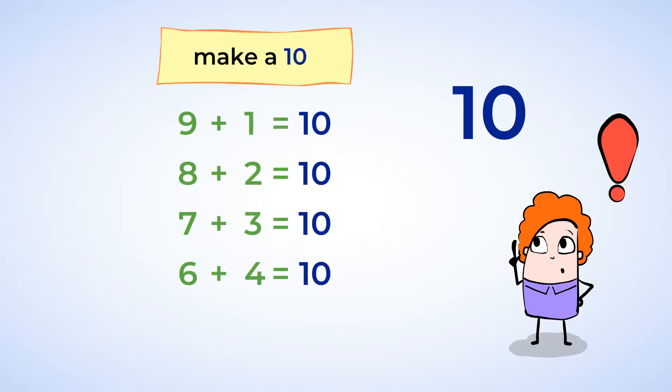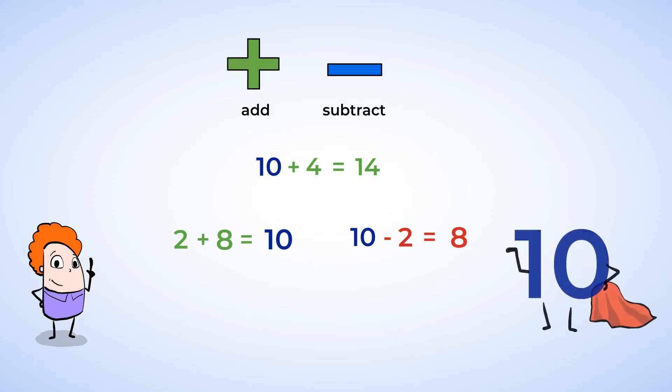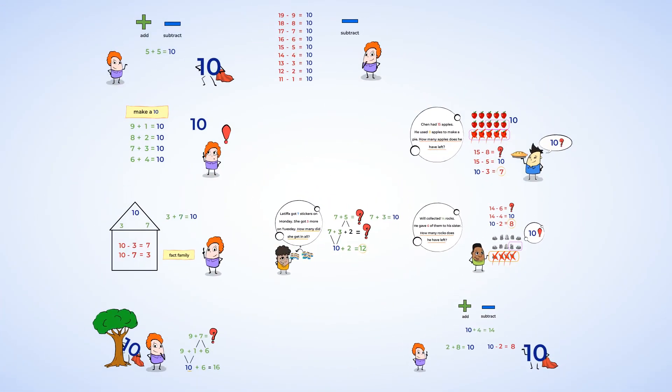Once you find a 10, you can quickly add a number that is smaller than 10 by changing the 0 to that number. For example, 10 plus 4 equals 14. You can also quickly subtract a number from 10 by using the ways to make a 10. For example, 2 plus 8 equals 10, so that means 10 minus 2 equals 8. I had so much fun today playing hide and seek with you and my friend 10. But the game doesn't have to stop today. Look for it when adding and subtracting, and it'll be there to help you.